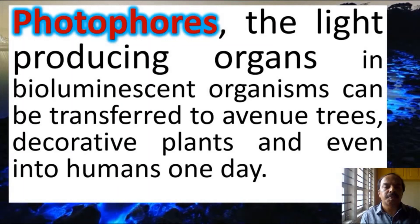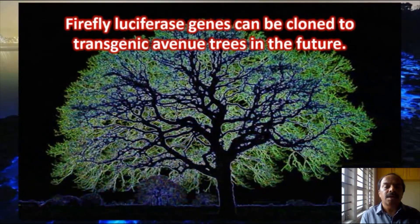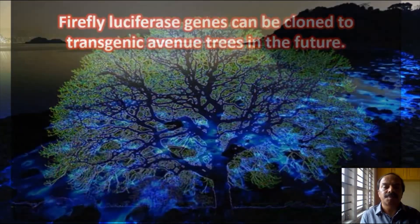Photophores are the organs responsible for bioluminescence, containing the cascade of enzymes and proteins required for the reaction. Scientists have transferred this cascade of genes into plants, especially avenue trees, so that the trees can glow at night — eliminating the need for street lights. This is an artistic imagination of an avenue tree with bioluminescent genes, which is not a reality yet, but this is the future prospect of bioluminescence: avenue trees that glow without electricity.